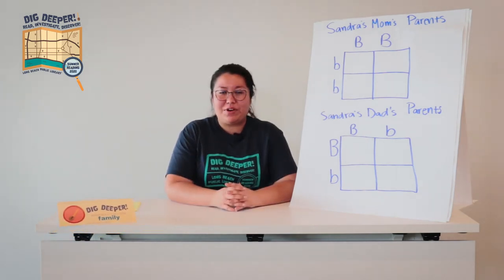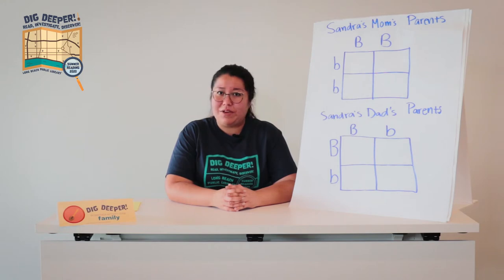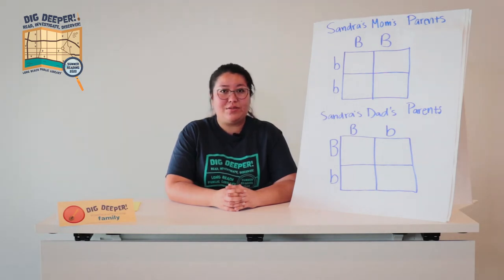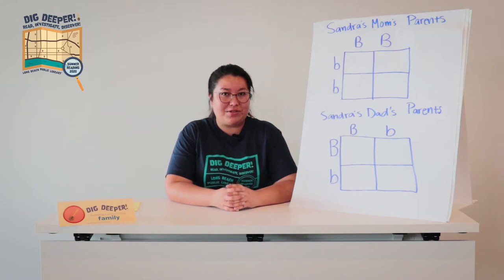Have you ever wondered why your hair is straight but your brother's or sister's hair is curly, or maybe why they have different colored eyes than you? Well, today we'll figure out how that happened with a Punnett square.